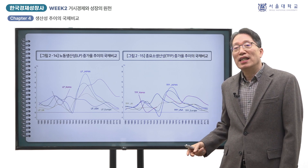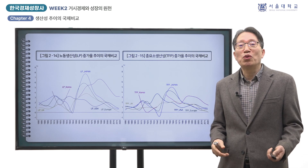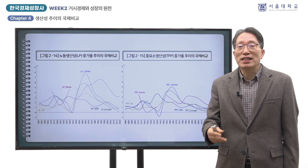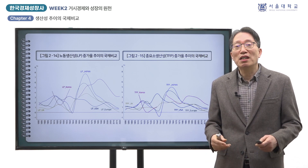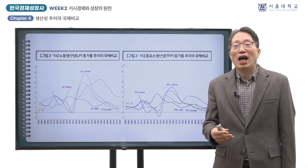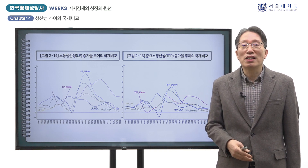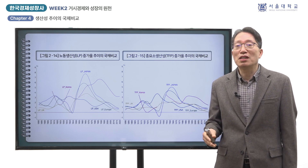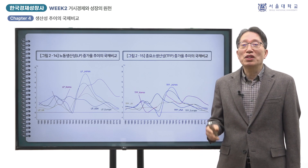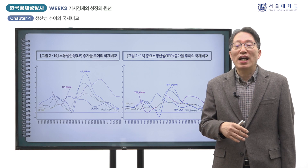미국이 두 세계대전 사이의 기간에 생산성 증가 추세가 가속된 데에는 중요한 기술 혁신이 확산되었기 때문입니다. 전기의 보급으로 조명의 혁신과 전기 모터가 널리 보급되었고, 내연기관의 확산으로 운송의 혁명이 일어났으며, 전화와 라디오 같은 통신·정보기술의 혁신도 이때 진행되었습니다. 그러나 새로운 기술이 널리 보급되기 위해서는 전기 가격의 충분한 하락과 신기술에 맞춰 공장 설계가 재편될 필요가 있었습니다.